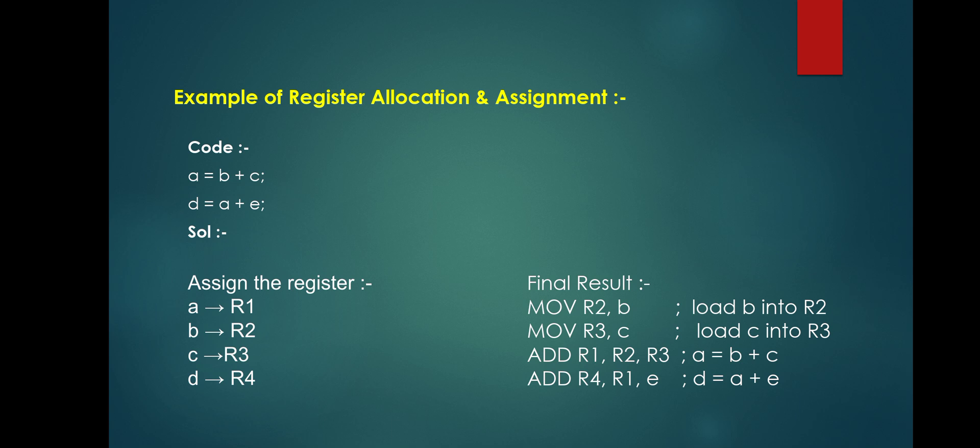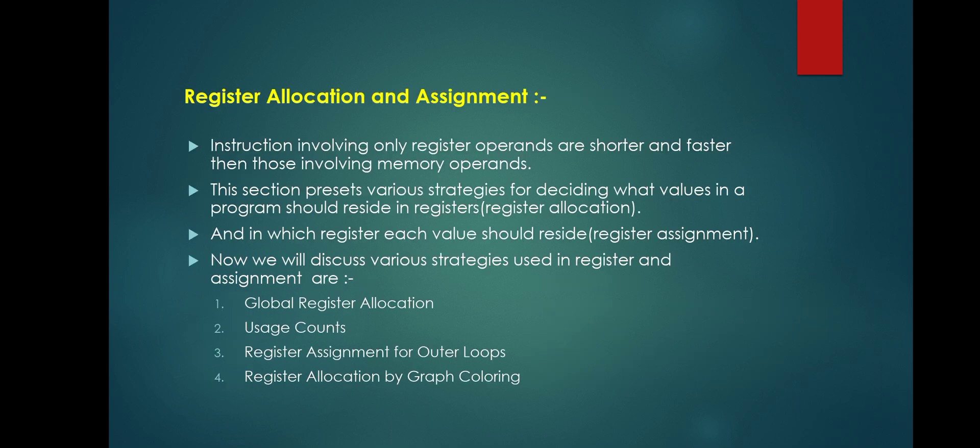The assembly code is: MOVE r2, b — loads b into register r2; MOVE r3, c — loads c into register r3; ADD r1, r2, r3 — performs the addition of r2 and r3 and stores the result in r1. This corresponds to a = b + c, and similarly d = a + e is handled.